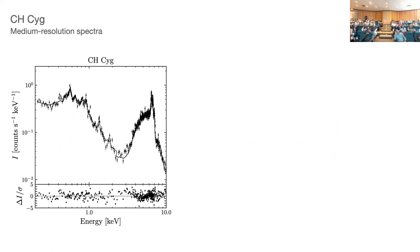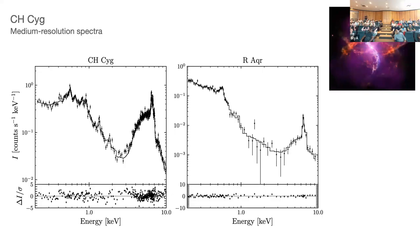We know that if you take R Aquarii and extract a spectrum including everything — the extended emission, the jet, and the central source — you get something that is almost exactly the same as CH Cygni, which has less angular resolution. You cannot resolve the emission lines in CH Cygni, but you could say it is also a beta-delta type symbiotic star. CH Cygni definitely includes extended emission that we are not resolving, plus emission from the central source.